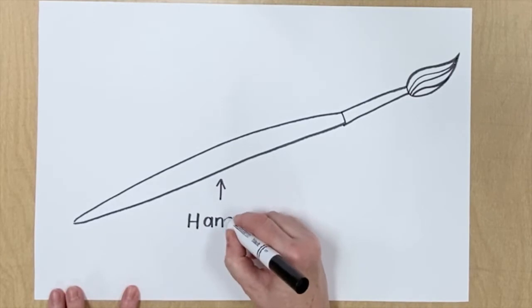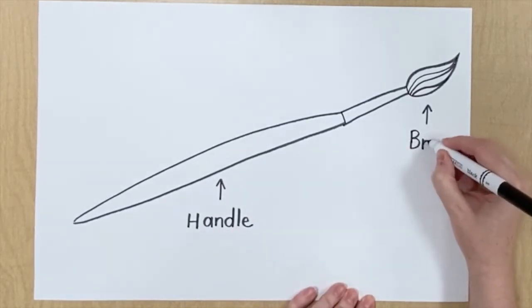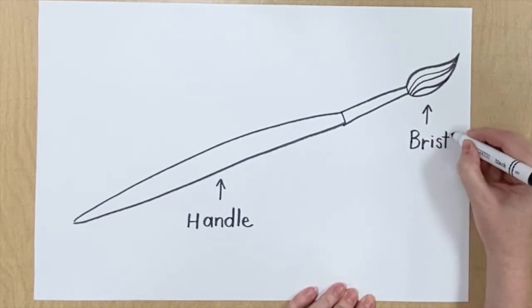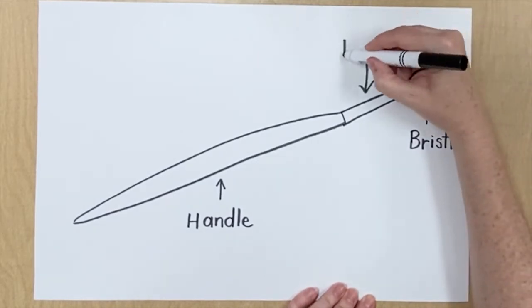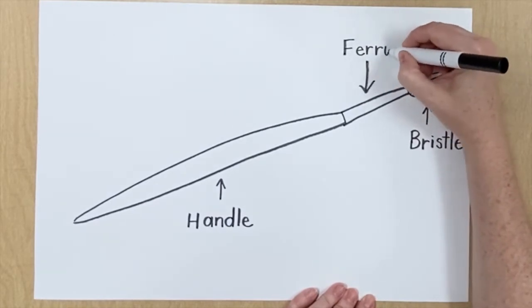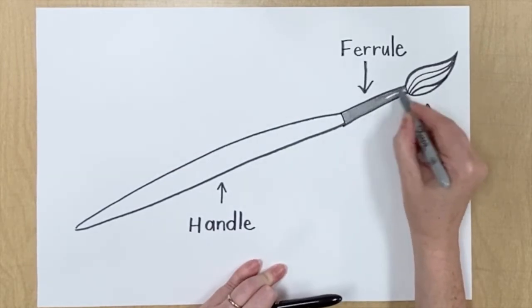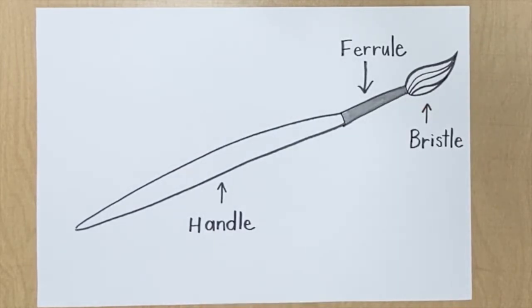The long stick usually made out of wood or plastic is the handle. The hair at the top are called the bristles and the part that joins the two together is called the ferrule. Usually the ferrule is made out of metal.